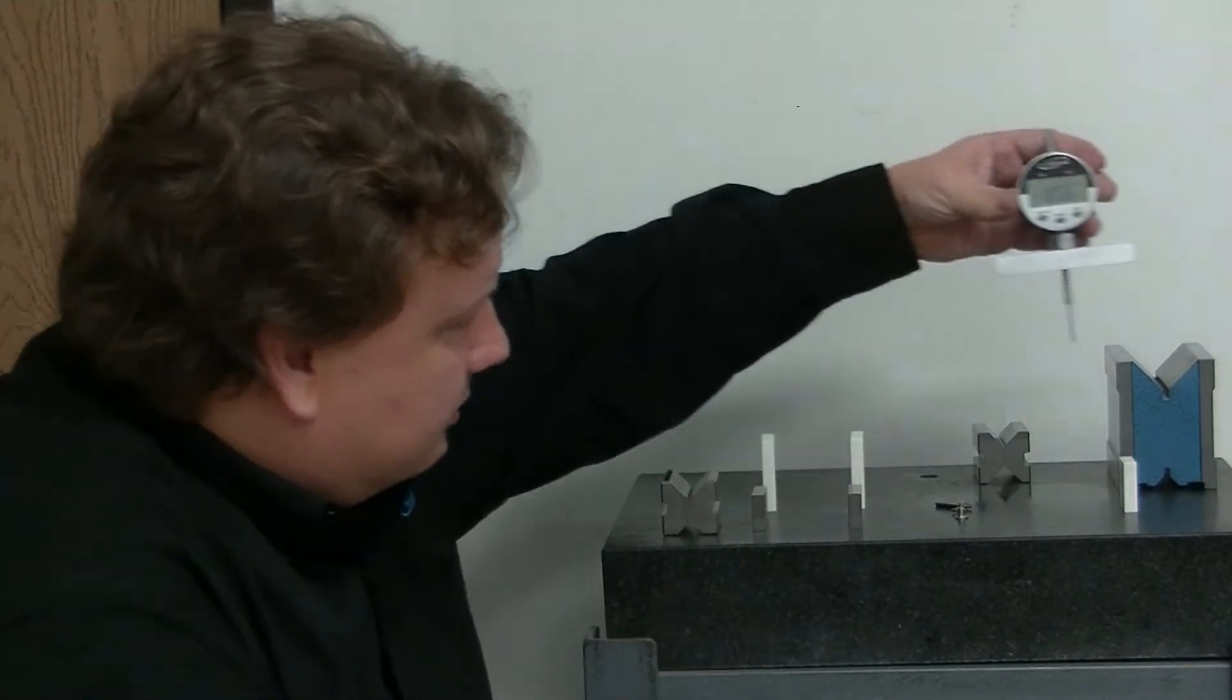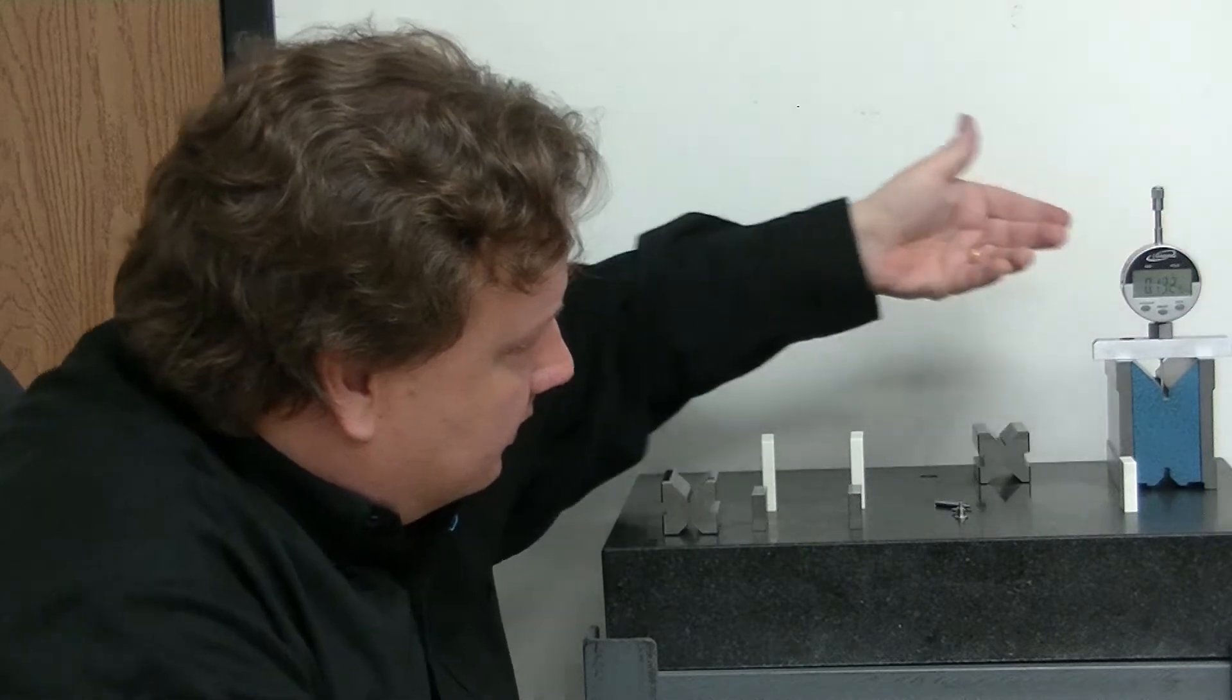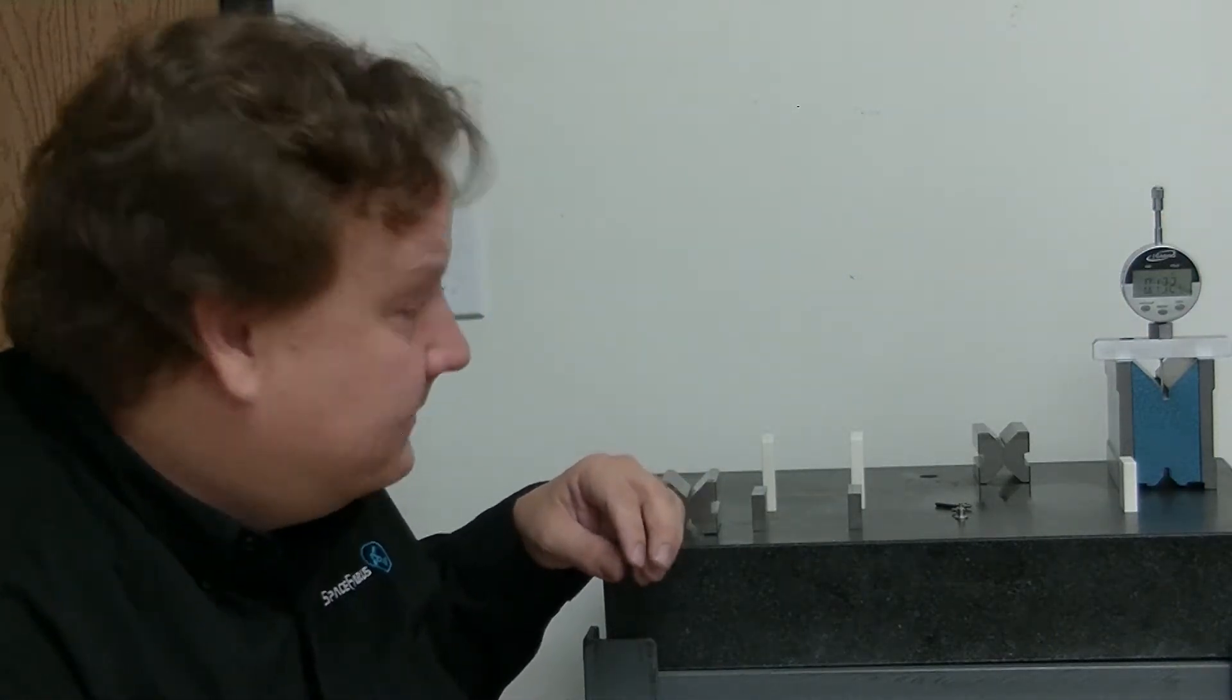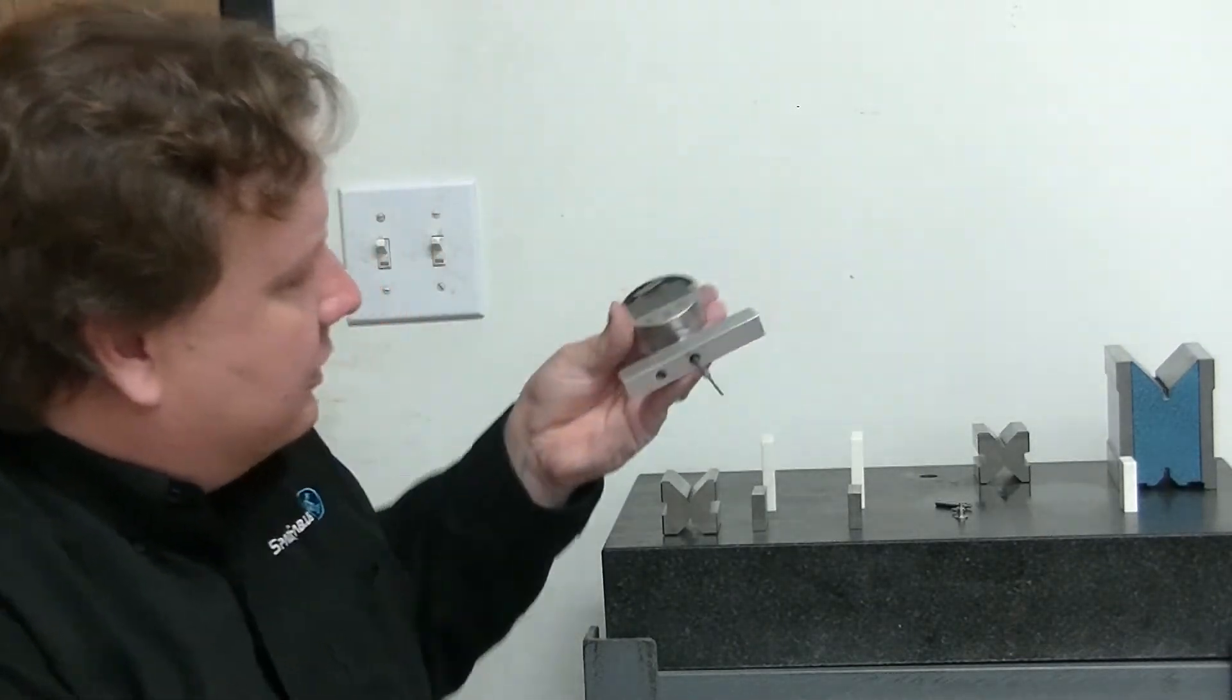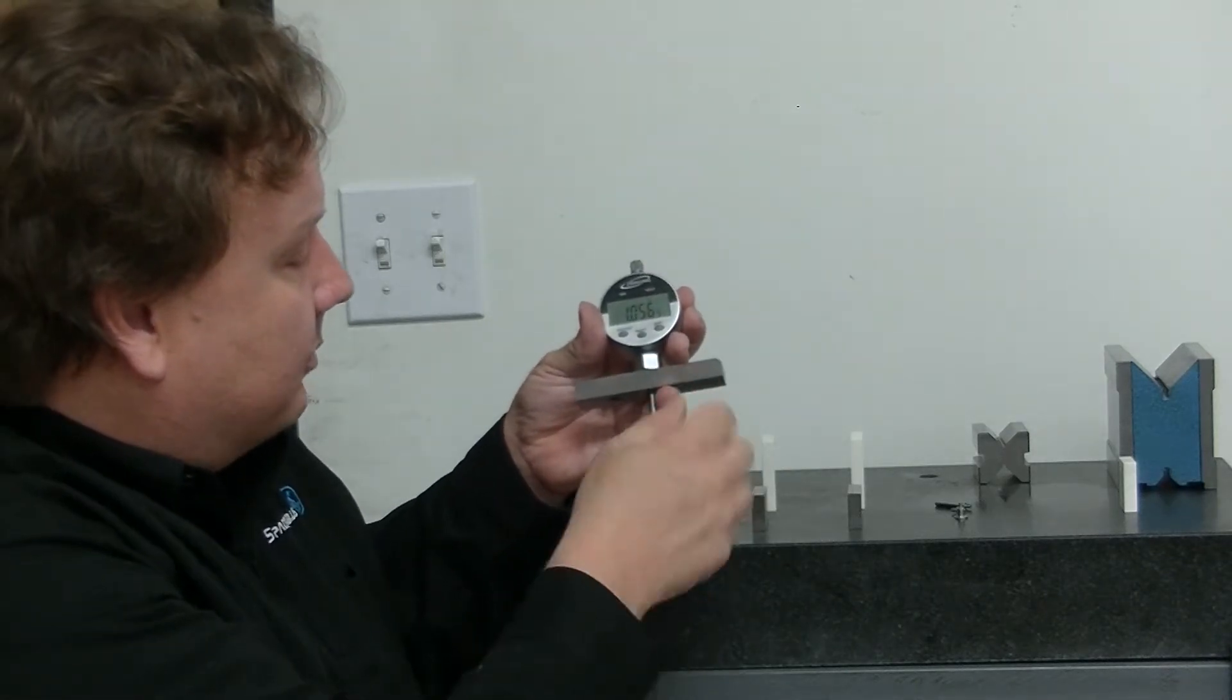And then you can measure depth in smaller places like that. So I'm getting 0.132 and a half inches. And then they also come with a very sharp one for really small points or small places.